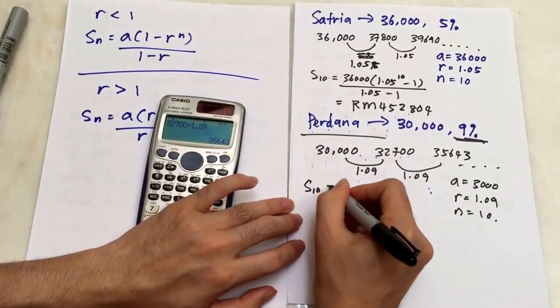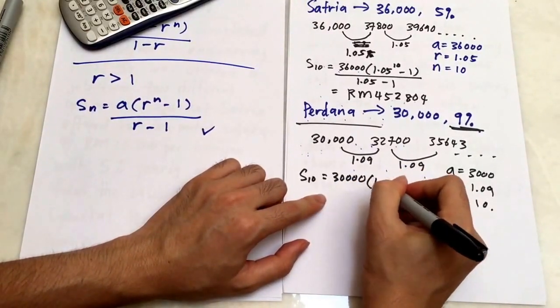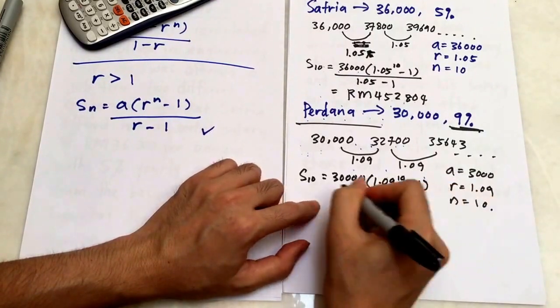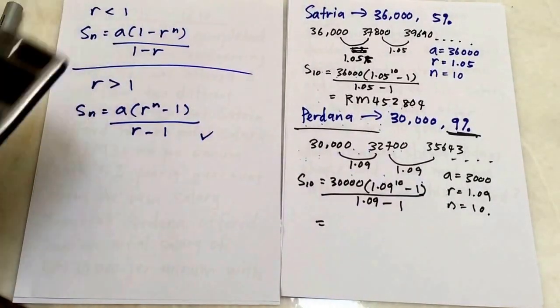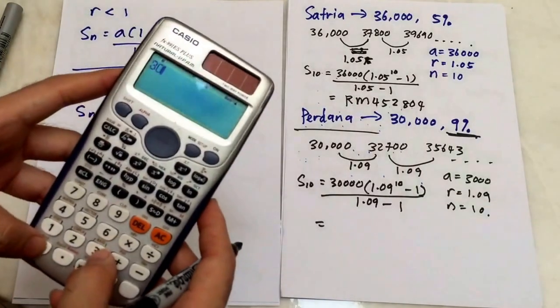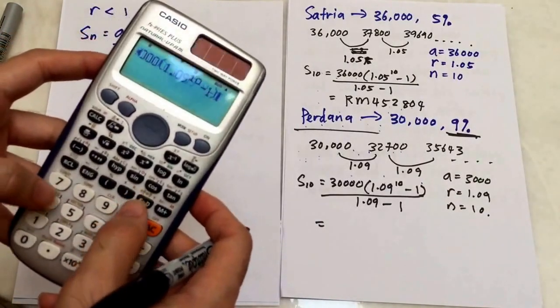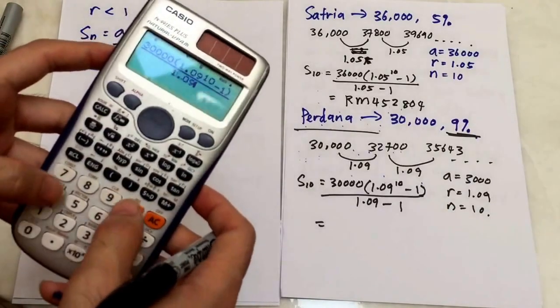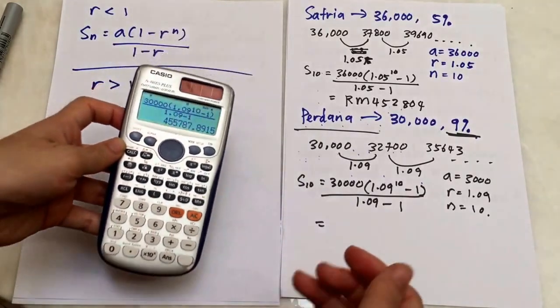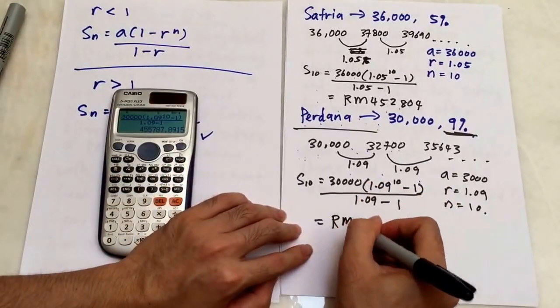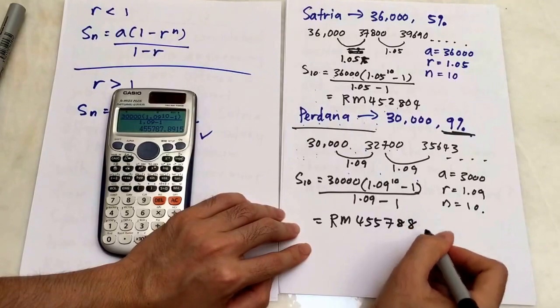I add 10 here. I use the same formula. My a is 30,000, and my r is 1.09 power of 10 minus 1 over 1.09 minus 1. I just use my calculator to solve this one: 30,000 × (1.09^10 - 1) / (1.09 - 1). This is how I press my calculator. Let's press equal. The amount will be RM455,788. I round off, so I get this amount.